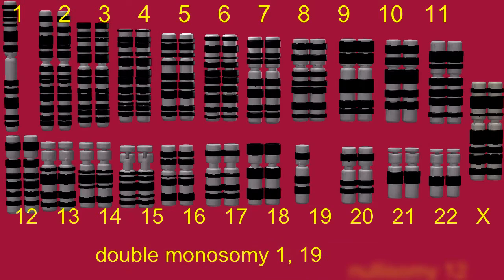A cell which has undergone a double monosomy is missing two separate chromosomes. This cell has a double monosomy because it is missing a copy of both chromosome 1 and chromosome 19.